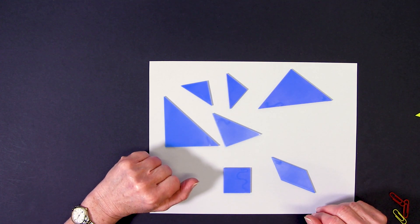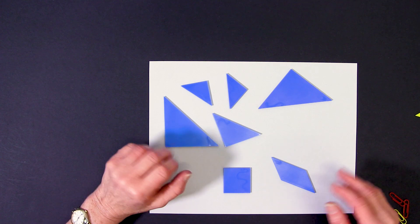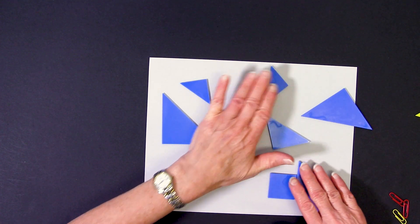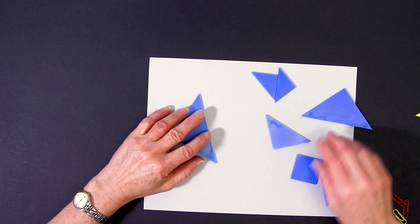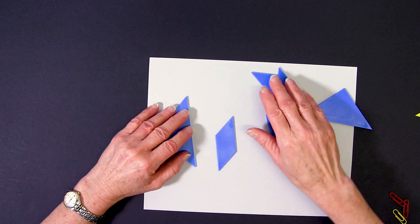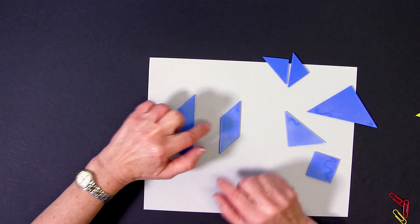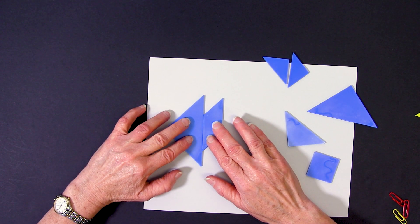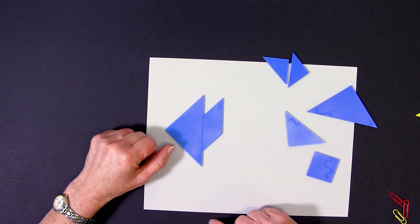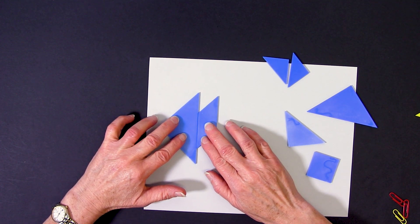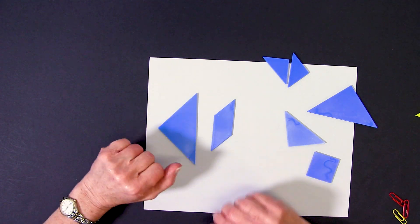One of the ways in which we can use the tangrams is to compare length. Now there's a variety of ways in which we can do that. One way is through direct comparison. So we put the two side lengths up against each other to compare which one is longer. And in this case we can very easily see this side length is longer than this one.